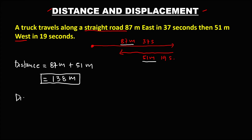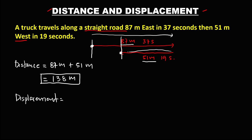For the displacement, we go from the starting point to the end point. The displacement equals 87 minus 51. So we have 87 meters minus 51 meters — the displacement equals 36 meters.